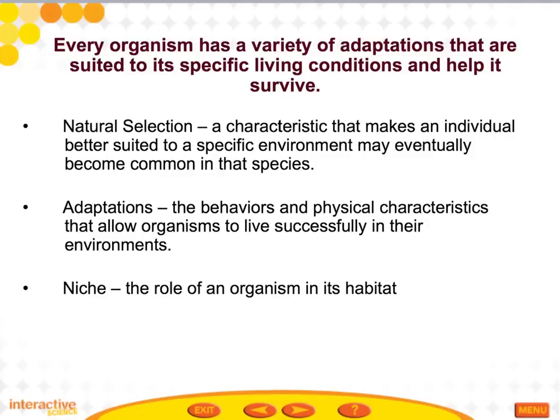The last section covers interactions among living things — how adaptations help organisms survive, what competition and predation are, and the three types of symbiosis. Every organism has adaptations suited to its specific living conditions. Key vocab: natural selection is a characteristic that makes an individual better suited to a specific environment and may become common in that species. Adaptations are the behaviors and physical characteristics that allow organisms to live successfully in their environments. A niche is the role of an organism in its habitat.